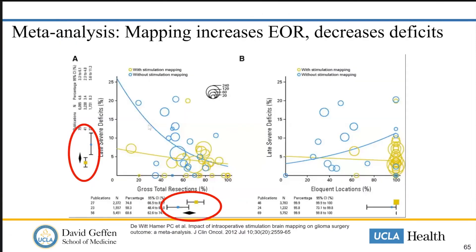That all being said, there is good data to support that the use of all these mapping strategies can help increase the extent of resection of tumors and decrease neurologic deficits. This is really borne out in the meta-analysis from DeWitt Hammer and company. Having it work both ways — decreasing deficits and increasing extent of resection — is really optimal, and is an approach that needs to be utilized.